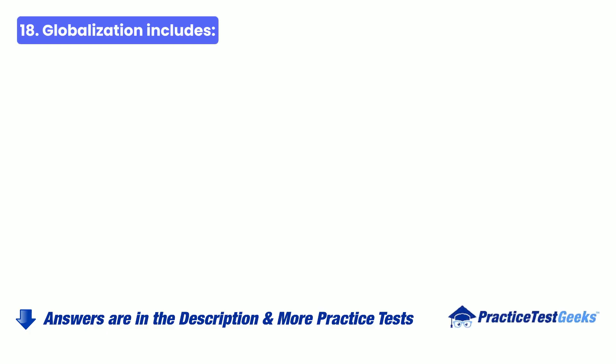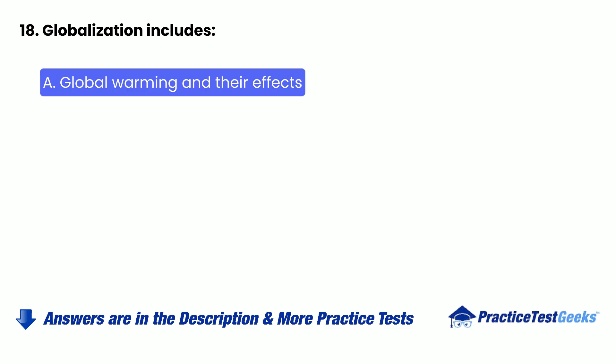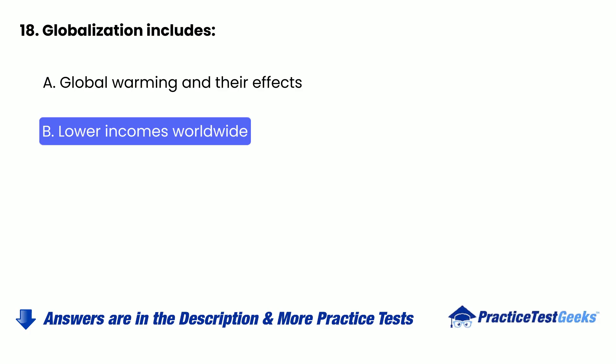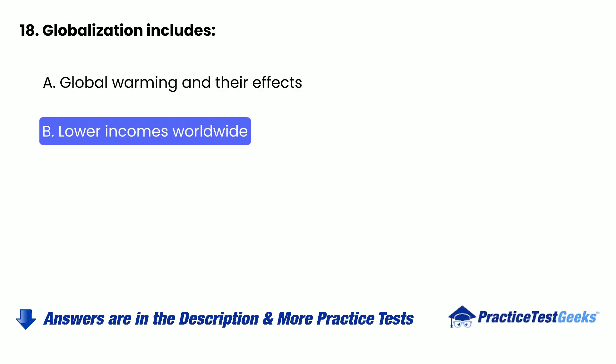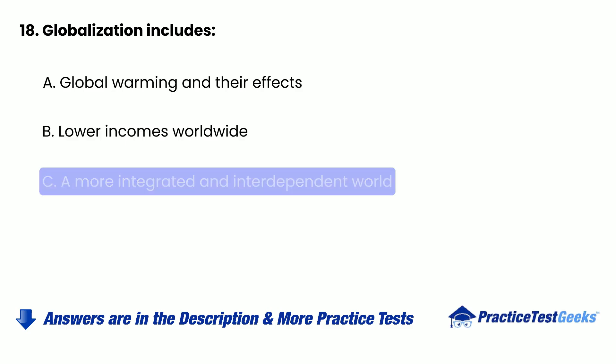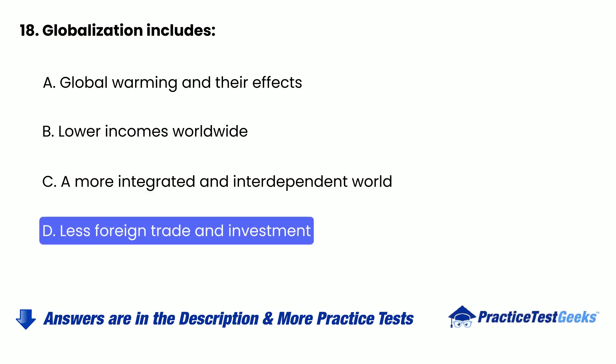Question 18: Globalization includes — A. Global warming and their effects, B. Lower incomes worldwide, C. A more integrated and interdependent world, D. Less foreign trade and investment.